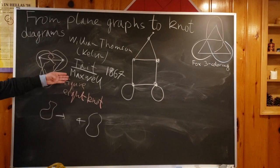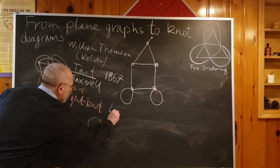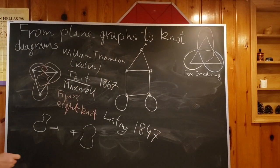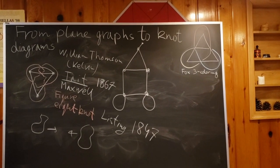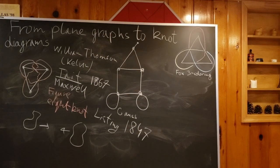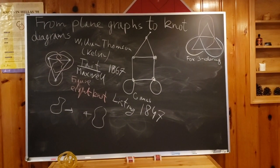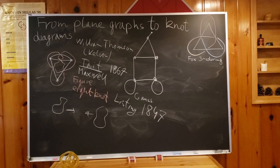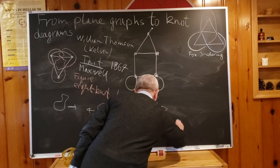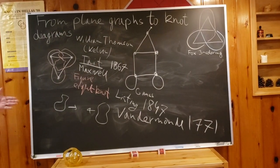He noticed that already a student of Gauss—much before, a student of Gauss called Listing—in 1847 wrote a short book about knots. Listing was a student of Gauss, and Gauss as well was thinking about knots but never published. This was essentially the first mathematical work on knots.